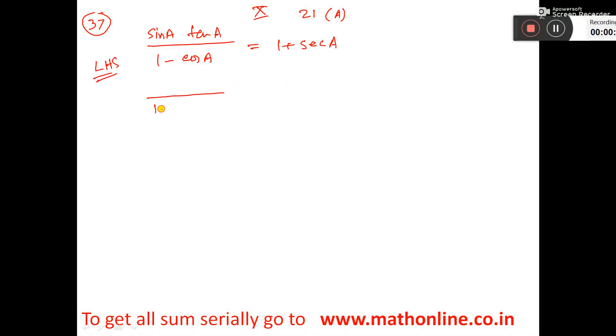So, take 1 minus cos A, this 1 plus cos A, take extra. Here also 1 plus cos A, take extra, and it was sine A into tan A.